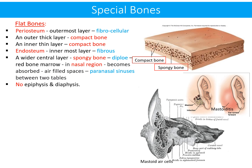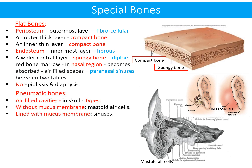Regarding special bones — first, flat bones: a flat bone has an outer thick layer of compact bone lined on its external surface by fibrocellular periosteum, and an inner thin layer of compact bone lined internally by a fibrous endosteum. There is a wide central layer of spongy bone with red bone marrow. In the nasal region this layer becomes absorbed, leading to production of air-filled spaces called the paranasal sinuses. There are no epiphysis or diaphysis in flat bones.